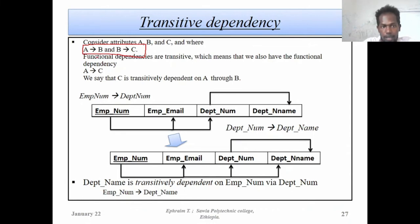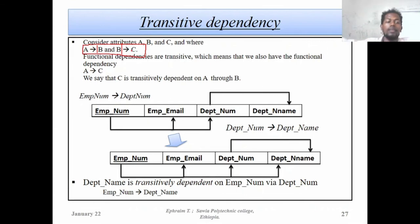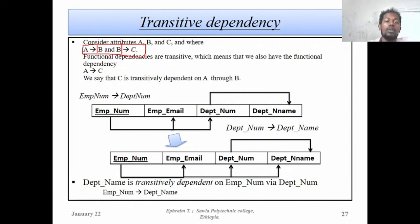So, we have Transitive Dependency: Attribute A to Attribute B determines Attribute C. Attribute C is transitively dependent upon Attribute A via Attribute B.